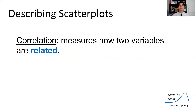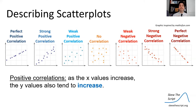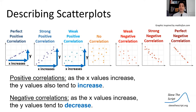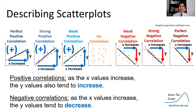When we describe scatter plots, we want to describe the correlation. A correlation measures how two variables are related. Positive correlations note when X increases, the Y variable also increases — we can see that as X values tend to increase, Y values also tend to increase. By contrast, a negative correlation means that as X values increase, Y values actually decrease. If we put a line model to the data, positive correlations have a positive slope and negative correlations have a negative slope.